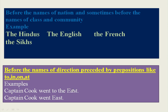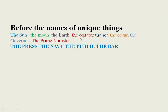The names of unique things need the definite article: the sun, the moon, the earth, the equator, the sea, the ocean. Similarly, unique positions such as 'the governor' — there is one governor per state — and 'the prime minister' — there is one per nation — also take 'THE.' We also use 'THE' before words like governor, prime minister, president, etc.